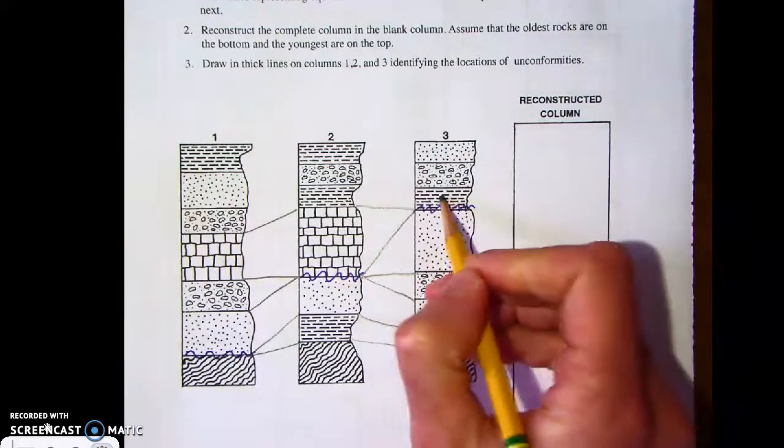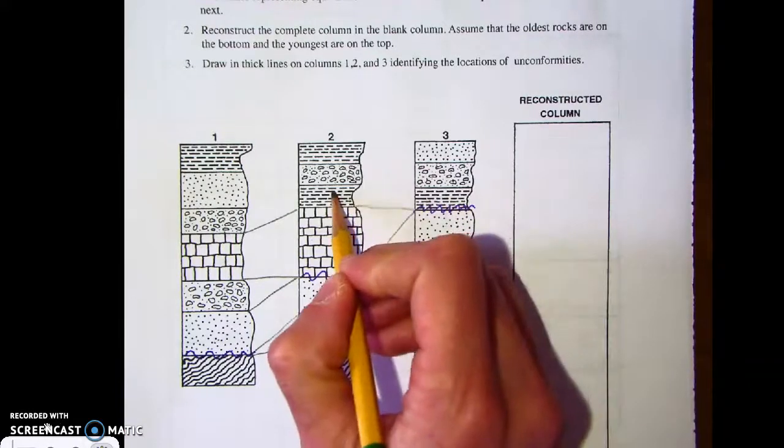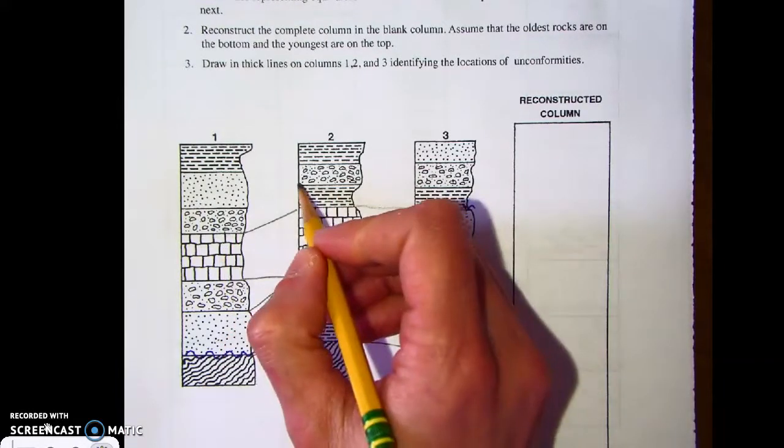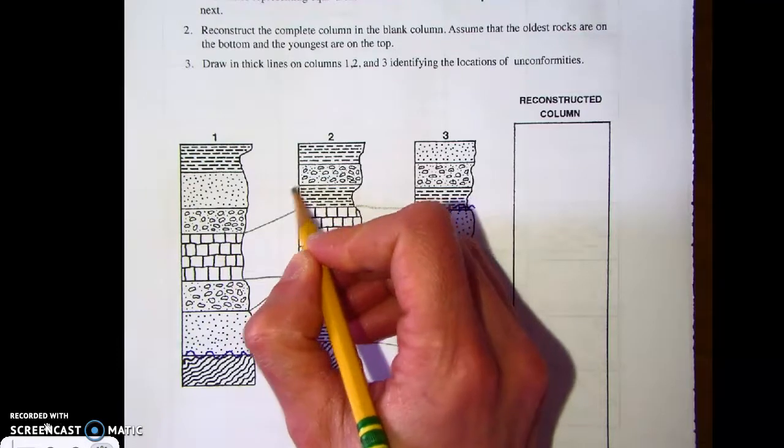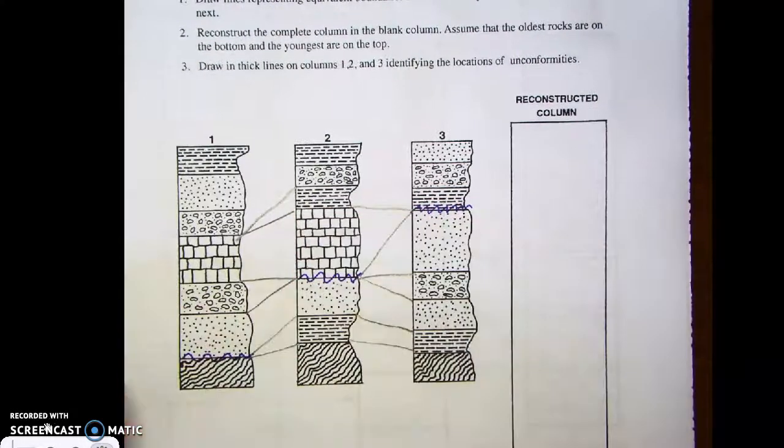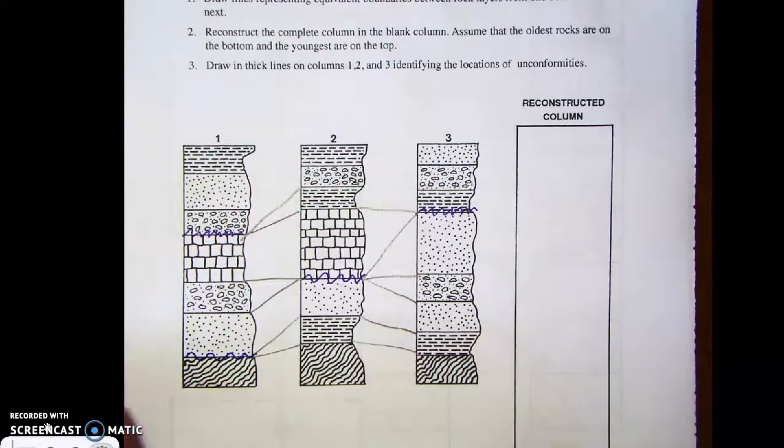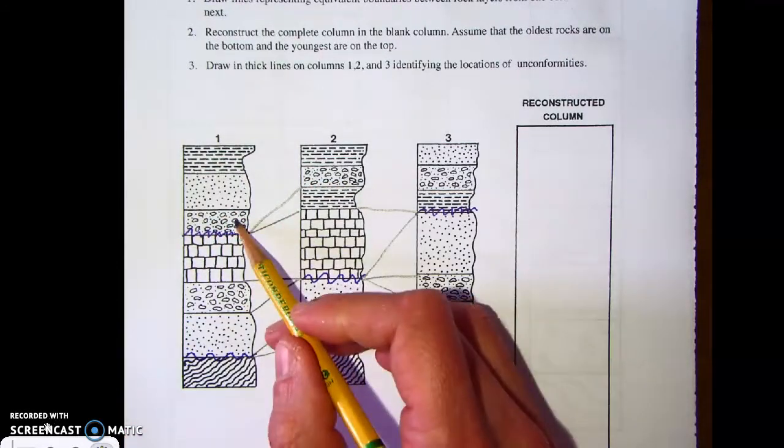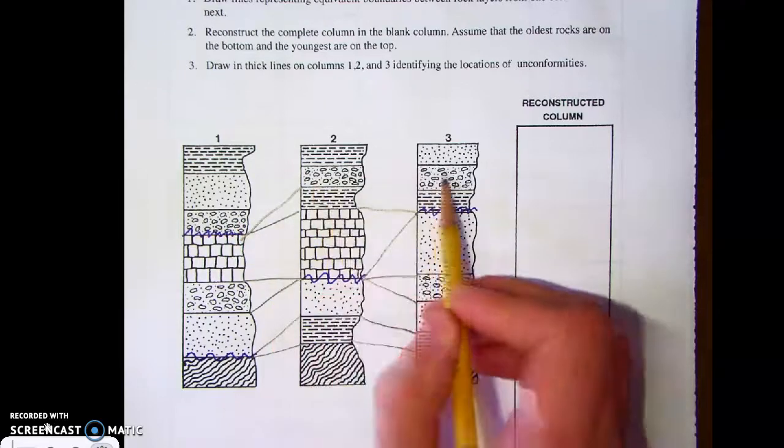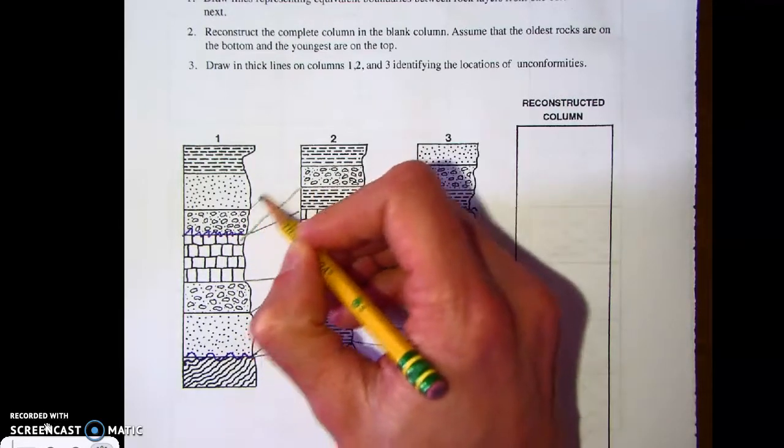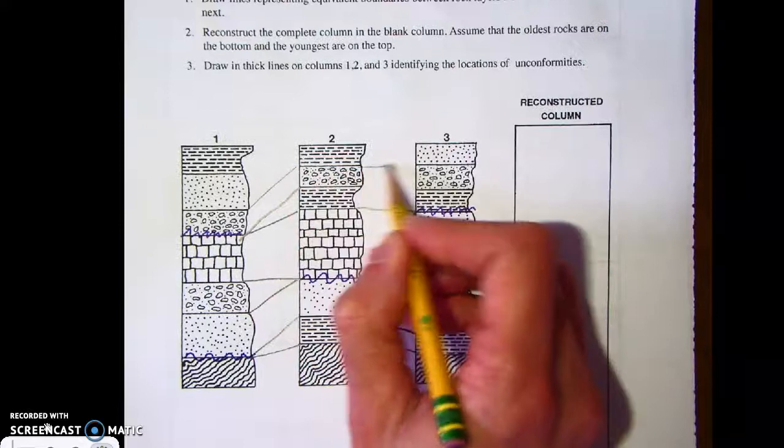Now we have shale and shale here. No shale in column one, which means again, another unconformity. So we have more rock that's weathered and eroded away. Now we have conglomerate, conglomerate, conglomerate - no unconformity, that matches nicely.